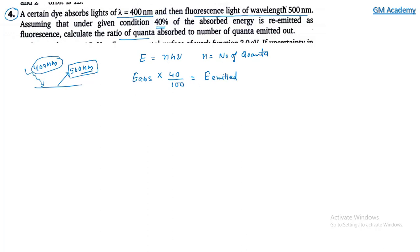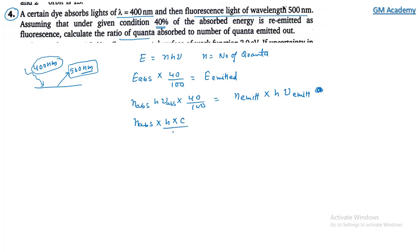The absorbed energy equals number of quanta absorbed × hc / λ(absorbed) × 40/100, and emitted energy equals number of quanta emitted × hc / λ(emitted). Setting these equal and substituting λ(absorbed) = 400 nm and λ(emitted) = 500 nm.